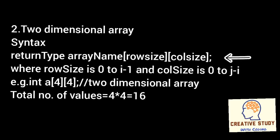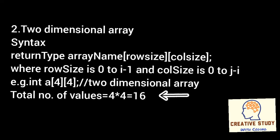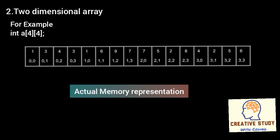The array type syntax is: array name, row size, column size, where row size is 0 to i minus one and column size is 0 to j minus one. For example, int a[4][4] is a two-dimensional array where both row size and column size are four, that is 0 to 3, of type integer. In this array we can store 16 values at their respective indices.